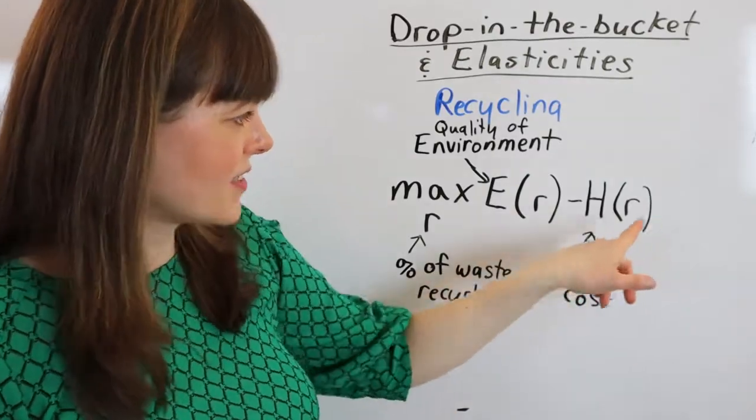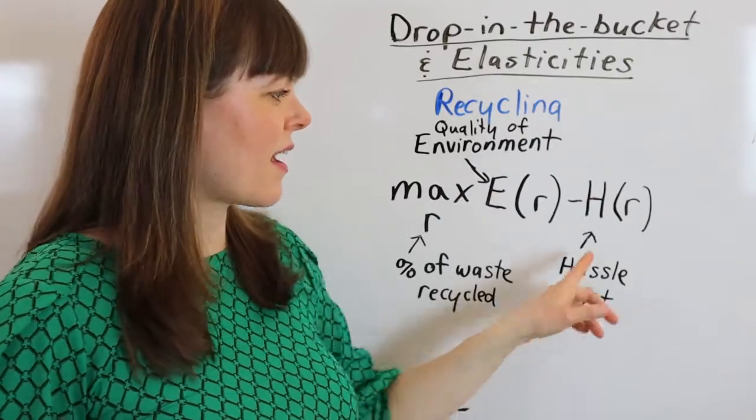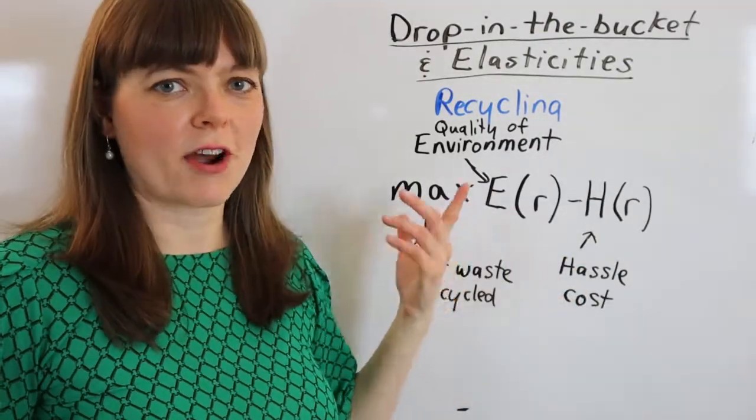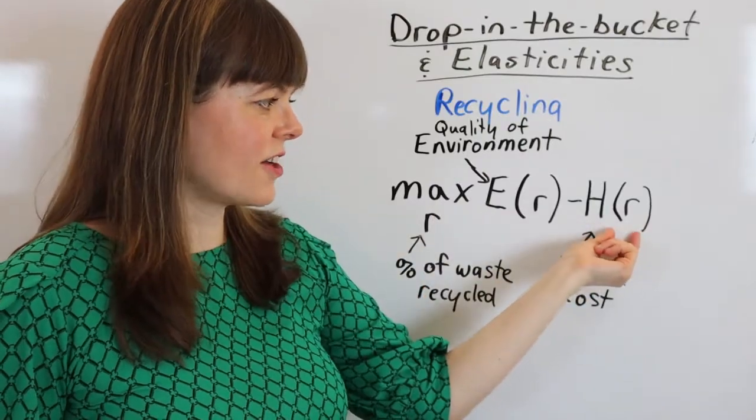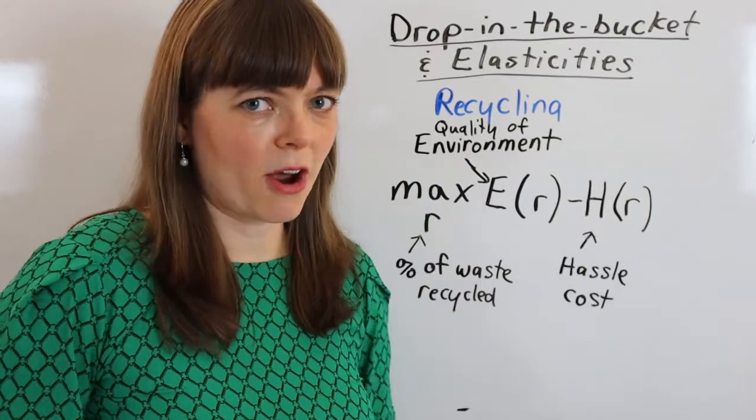Now, the cost here is going to be some sort of effort cost. The fact that it's effortful to recycle is annoying. I'm going to call it a hassle cost, since we've already used E for environment. And this cost here is going to have a classic increasing marginal cost shape, so let me draw that.